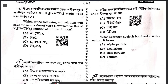Sixth question: which of the following salt solutions will have the same value of Van't Hoff factor i as that of K₄[Fe(CN)₆]? The Van't Hoff factor i is the total number of ions. K₄[Fe(CN)₆] has a total of 5 ions. The only possible answer is aluminum sulfate — 3 aluminum ions and 2 sulfate ions, totaling 5. Answer is A.